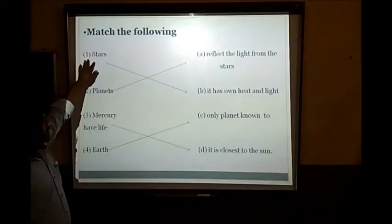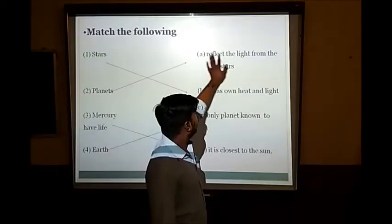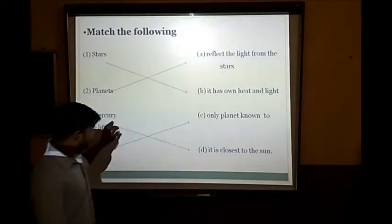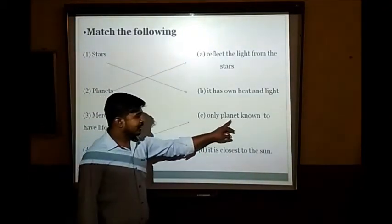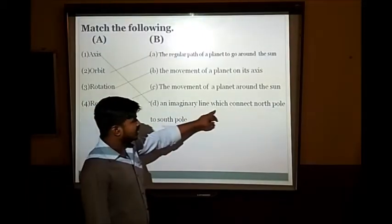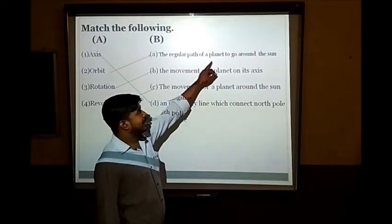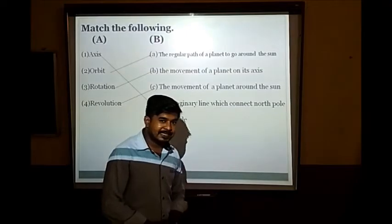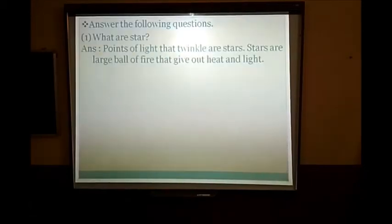Match the following: Stars — have their own heat and light. Planet — reflects light from the stars. Mercury — it is closest to the sun. Earth — only planet known to have life. Axis — imaginary line which connects north pole to south pole. Orbit — the regular path of a planet going around the sun. Rotation — the movement of a planet on its axis. Revolution — the movement of a planet around the sun.